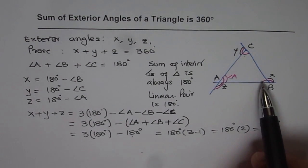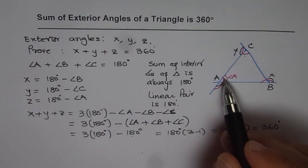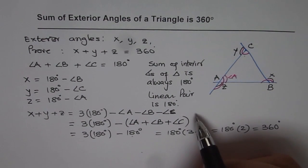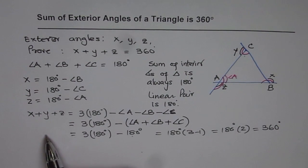So basically, we know that the sum of interior angles of a triangle is always 180 degrees. We also know that a line forms 180 degrees. So from the combination of these two, we can show that the sum of exterior angles for any triangle is 360 degrees.